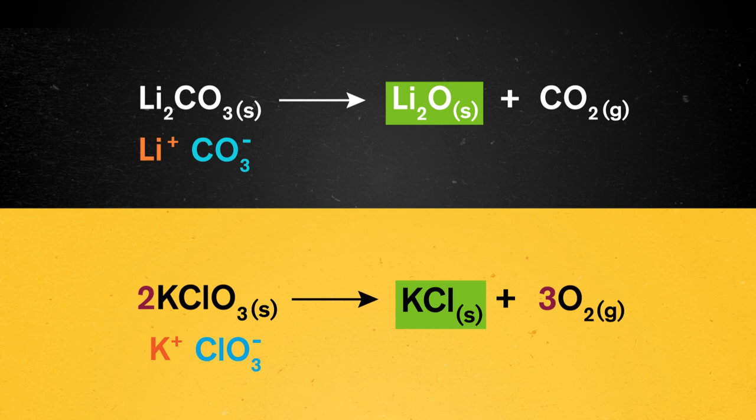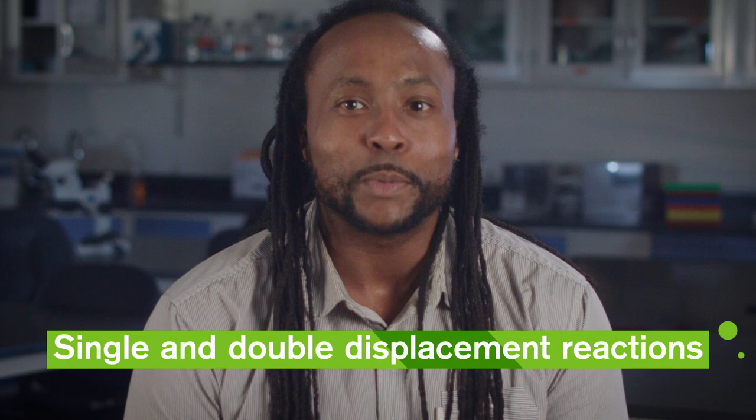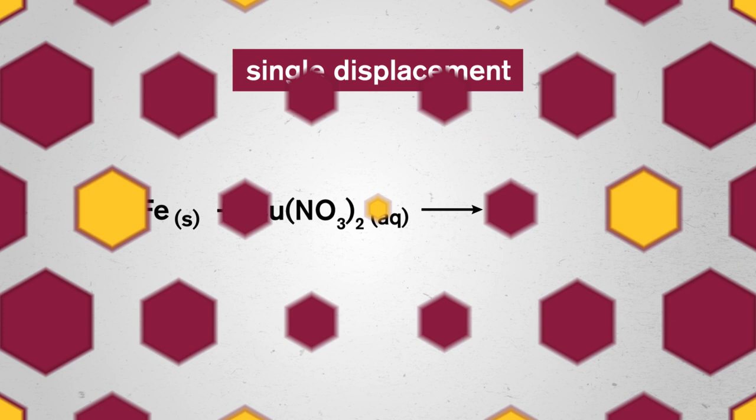Let's move on to single and double displacement reactions. We compared single displacement to a love triangle back when we first learned about it, because one of the substances loses its partner while the other gains it in the products. If we apply this knowledge to an example, let's see if we can determine what the products should be.